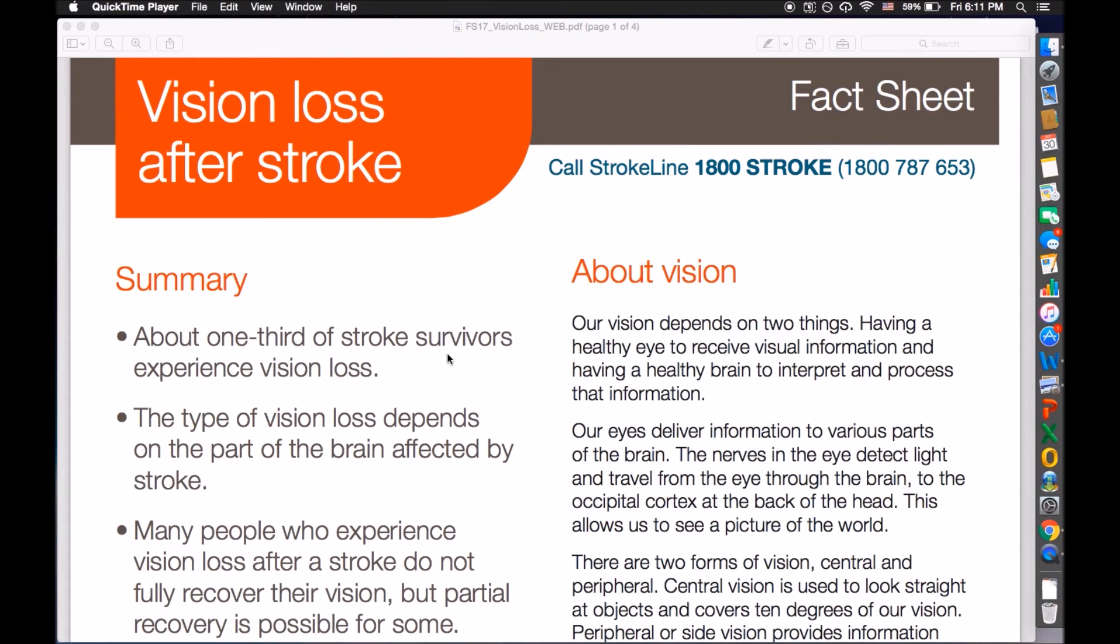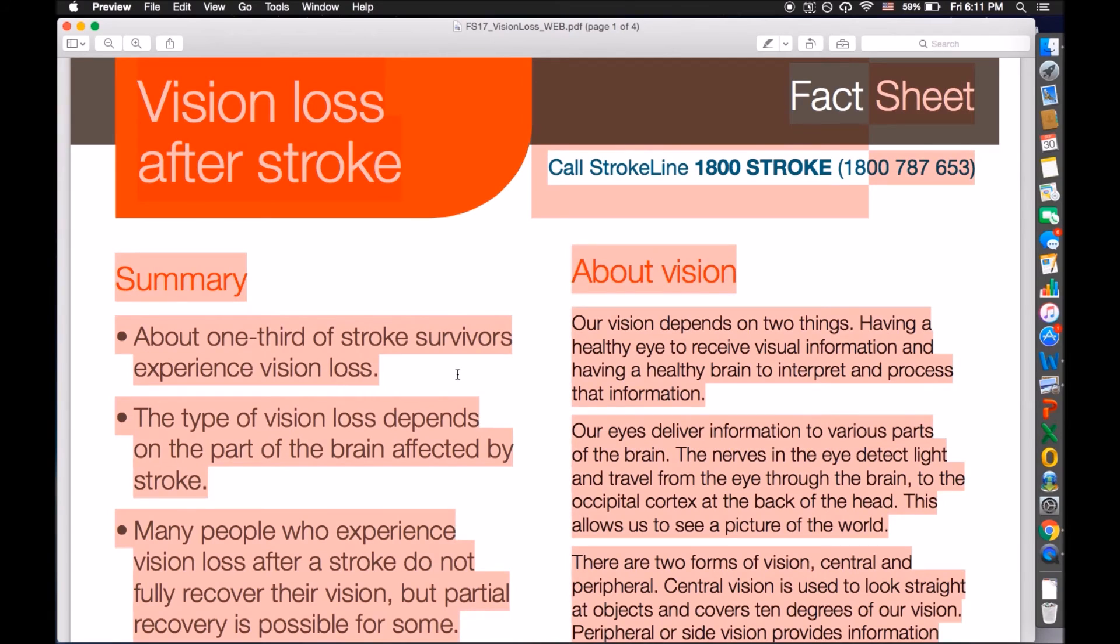To select text without manually highlighting, press Command A. Then use our text-to-speech shortcut. Vision loss after stroke summary. About one-third of stroke survivors experience vision loss. Use the same shortcut to turn off the text-to-speech function.